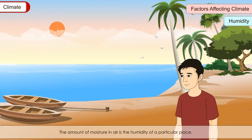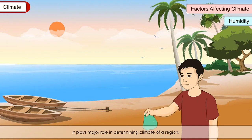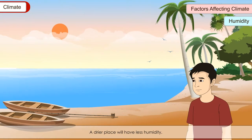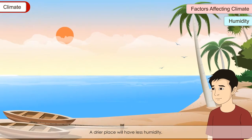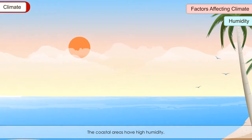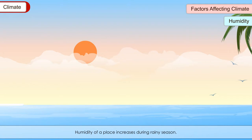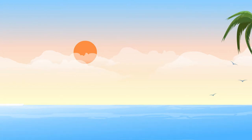Humidity: The amount of moisture in air is the humidity of a particular place. It plays a major role in determining the climate of a region. A drier place will have less humidity, while coastal areas have high humidity. Humidity of a place increases during the rainy season.